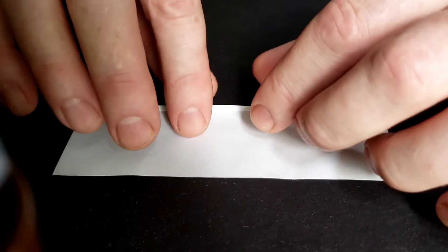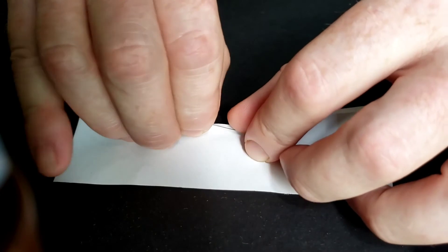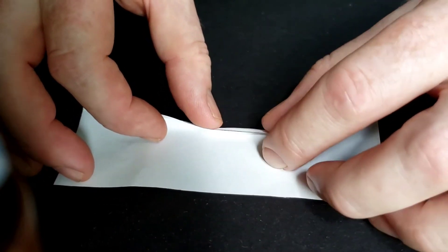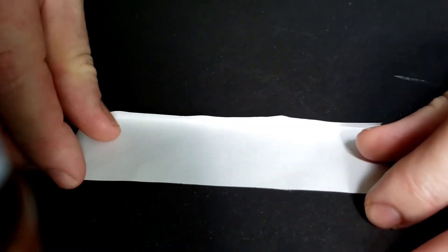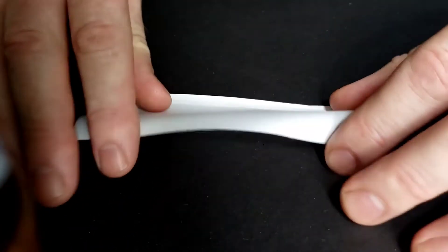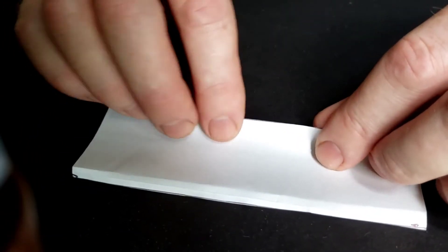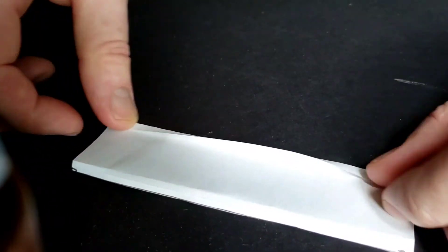To fold the glider, take one of the rear edges, fold it up just a little bit, and then fold it all the way across from one end to the other. Then turn it over and do the opposite edge in the opposite direction, so one goes up and one goes down.